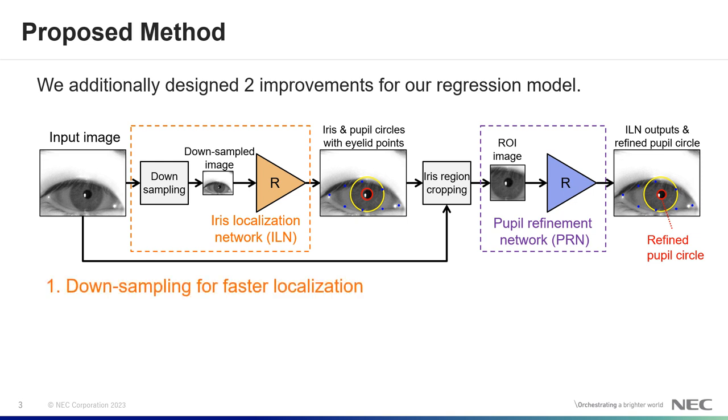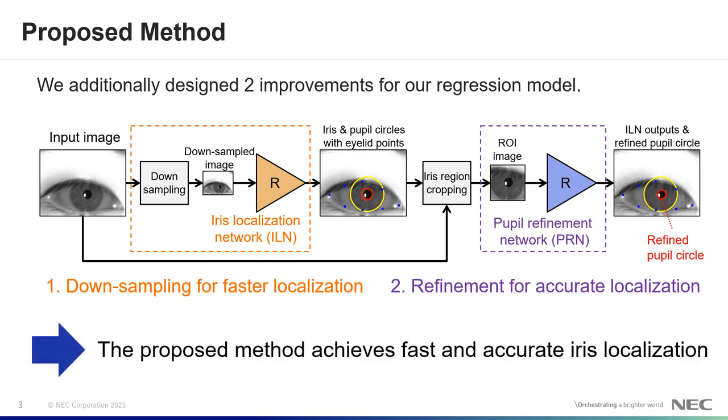First one is downsampling for faster localization, and second one is pupil refinement for accurate recognition. Thanks to these two improvements, our proposed method achieves fast and accurate iris localization.